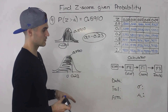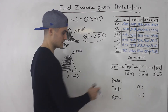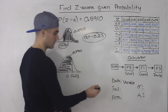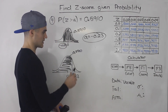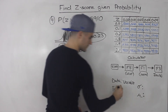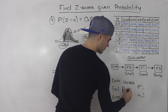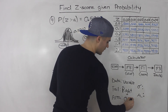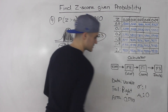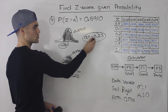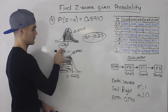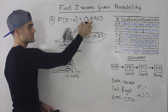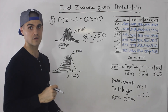And if you use the calculator, same inputs when you get to the data variable screen. The tail is going to be a right-tail probability. The area we're given is 0.5910, standard deviation 1, mean is 0. When you execute that, you should get negative 0.23 — so that's the z-score for this given right-tail probability of 0.5910.